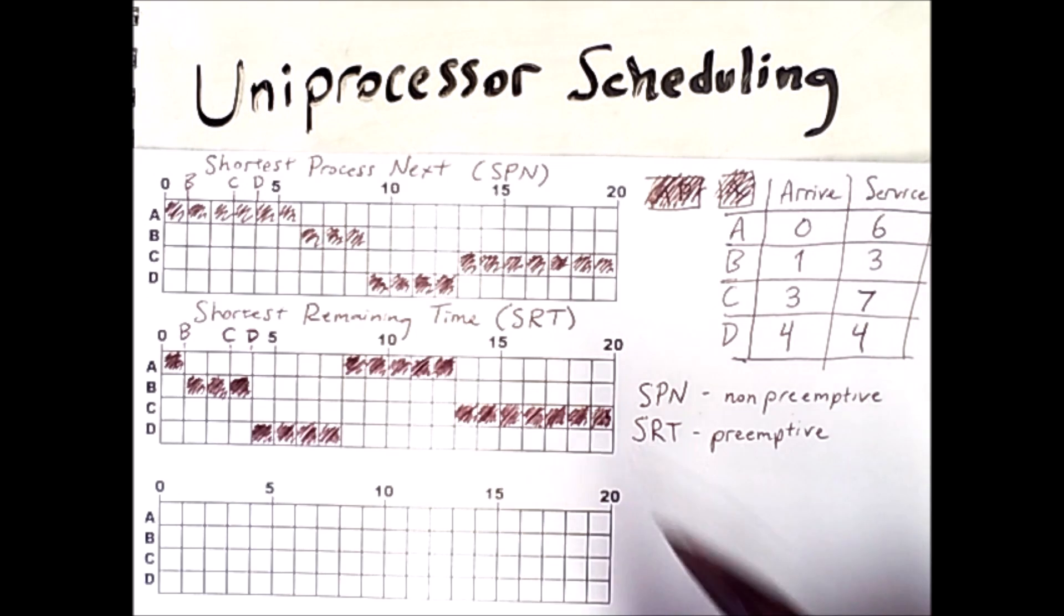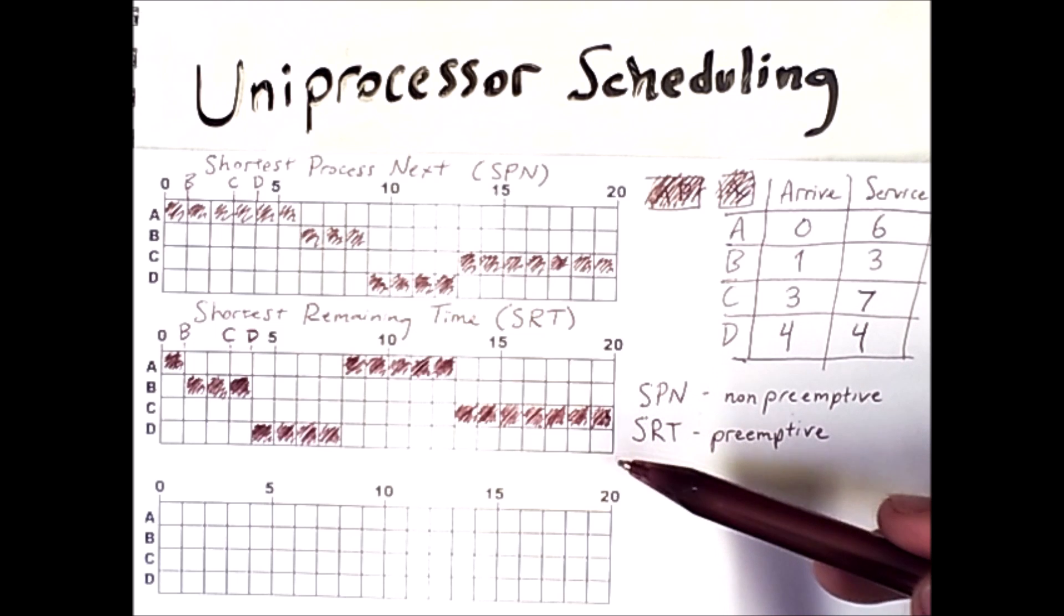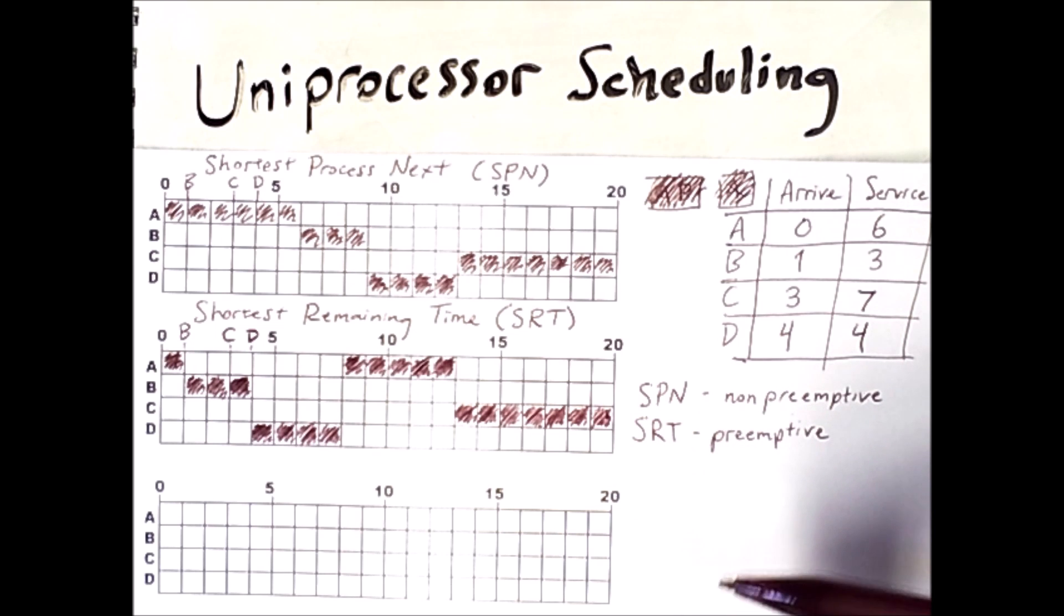Now a problem with both of these approaches is that they are prone to starvation. If a very large process wants to run, in this example C, it will have to wait until all the short processes finish. In this case we did eventually get to a point where C was the only process left.